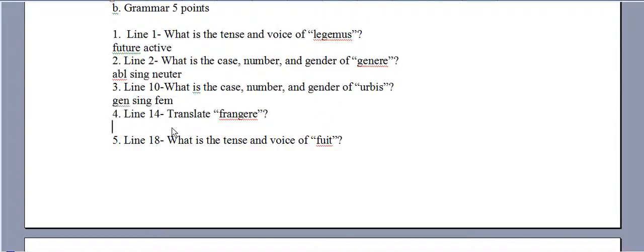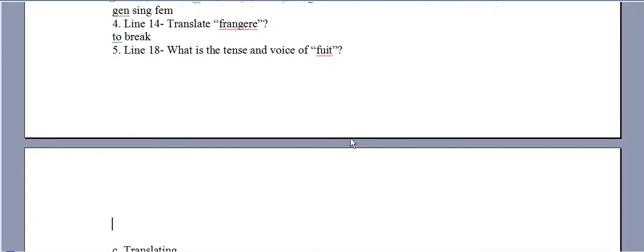Frangare is the present active infinitive, and this is translated to break. Fu it is from sum. It's the third principal part with the it ending making it perfect. And if you know sum, it can only be active, and that it ending is active.